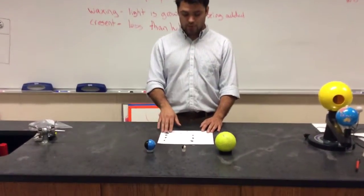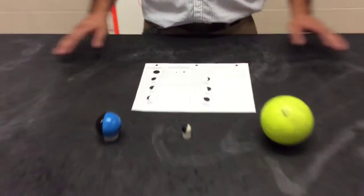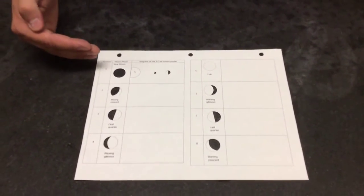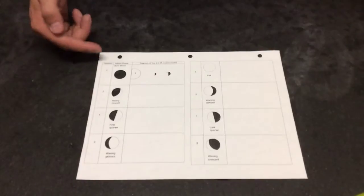We've got a worksheet, 1 through 8, and it shows us if we were to observe the night sky every couple of nights, what the moon would look like in succession, so 1 through 4 and then 5 through 8.